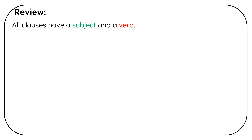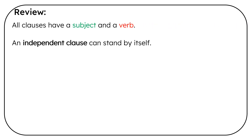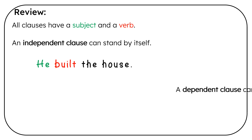All clauses have a subject and a verb. An independent clause can stand by itself. For example: he built the house. We have a subject, he, and the verb, built, and it can stand by itself, so it's independent.